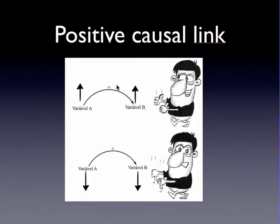Let's begin with an informal explanation. Positive causal link shows a directly proportional relationship between two variables. If variable one goes up, the other goes up as well. Variable B goes up as well.